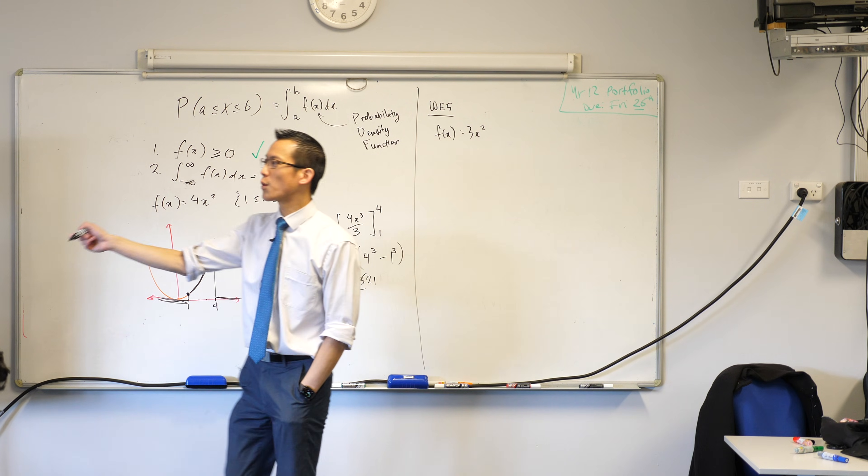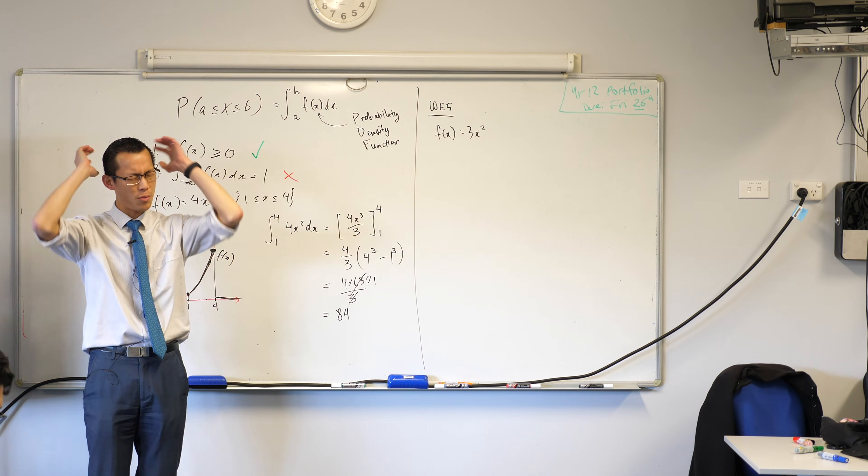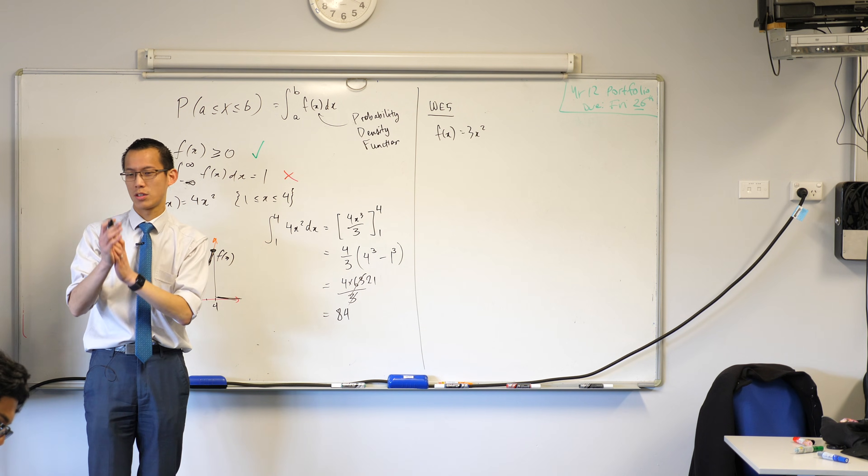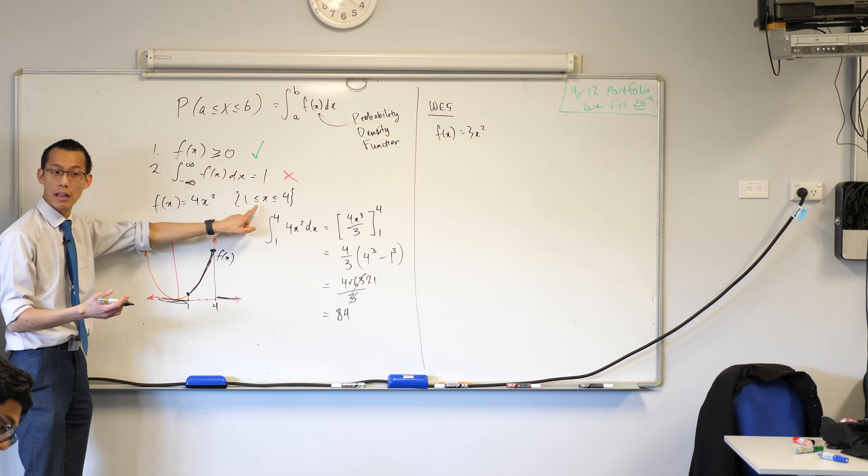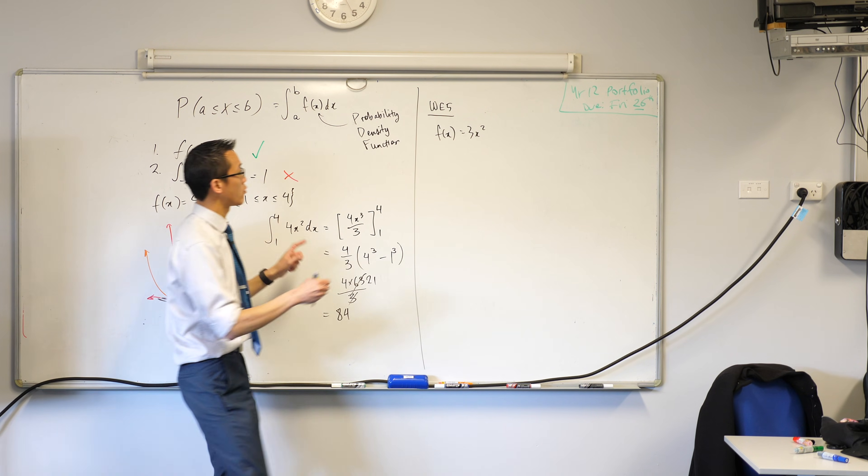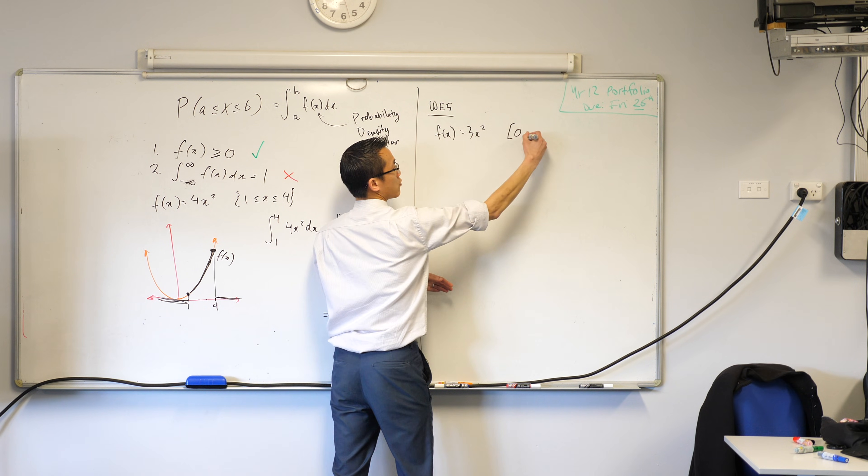Okay they give you also this interval so you have to remember how to define regions not just with inequality notation like this but also with interval notation. So it's written as, you've got your square brackets, 0 comma 1.